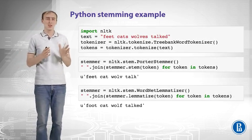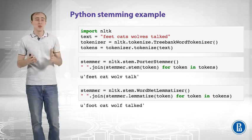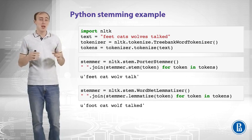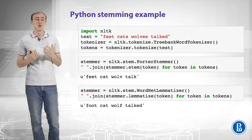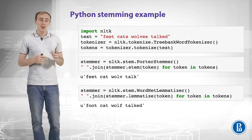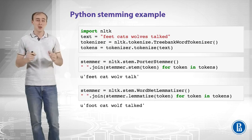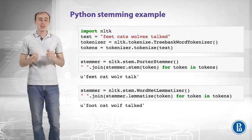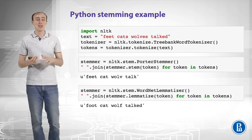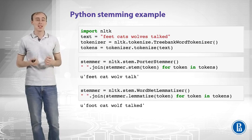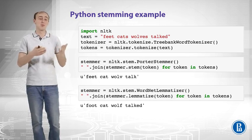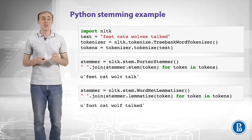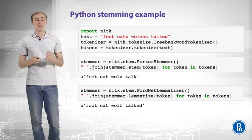Let's look at the Python example. We import NLTK, take a bunch of text, and first tokenize it using the Treebank tokenizer to get a list of tokens. Then we can instantiate a Porter stemmer or WordNet lemmatizer and call stem or lemmatize on each token to get the results we reviewed. It's pretty easy in Python with NLTK.